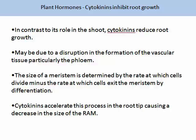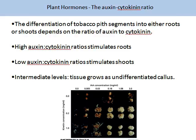Cytokinins can inhibit root growth. In contrast to their role in the shoot, cytokinins reduce root growth. This may be due to disruption of the formation of vascular tissue, particularly the phloem. The size of a meristem is determined by the rate at which cells divide minus the rate at which cells exit the meristem by differentiation. Cytokinins accelerate this process in the root tip, causing a decrease in the size of the root apical meristem.